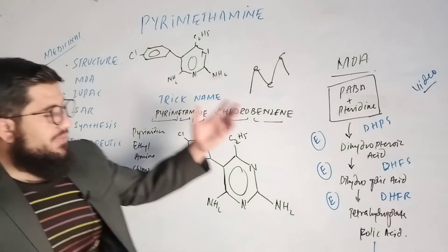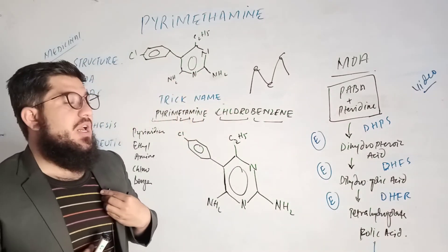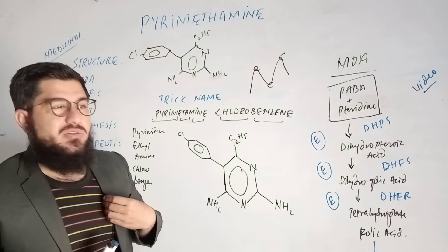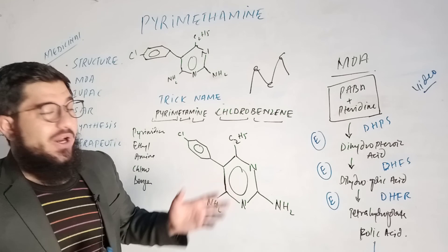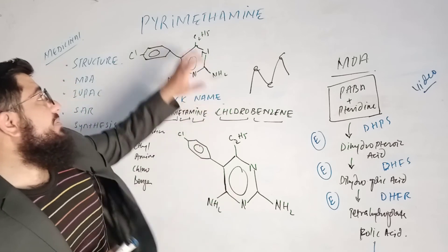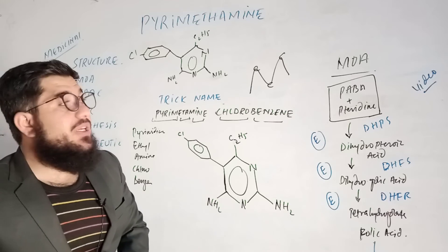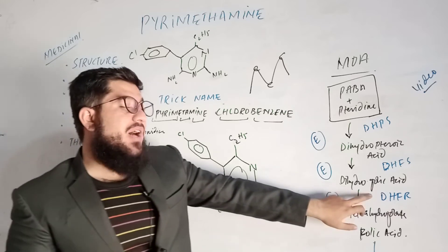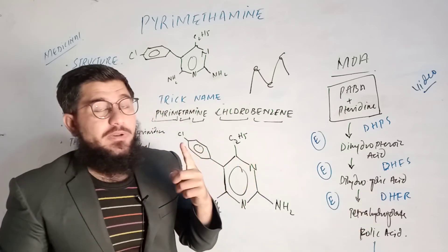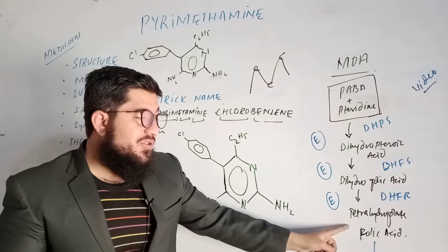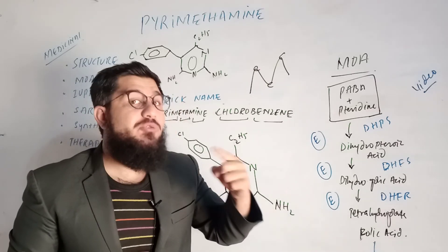Now let's come to the mechanism of action. We have discussed this mechanism in another lecture on sulfonamide and trimethoprim from a structure and mechanism point of view — you can refer to that video for details. In short, pyrimethamine works by inhibiting an enzyme called dihydrofolate reductase.